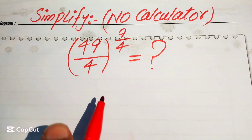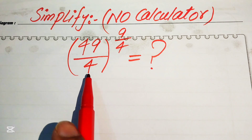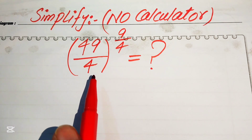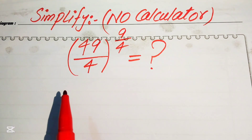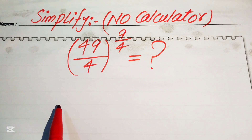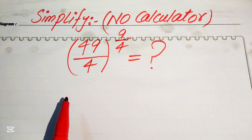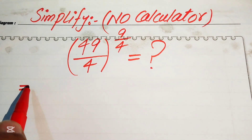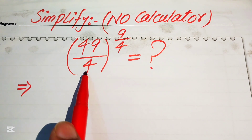Hello everyone. How to simplify this algebraic expression: we have 49 over 4 to the power of 9 over 4. We write this into the lowest form. Remember, a calculator is not allowed in this problem, so I will show all of the working on your page or paper. The very first step is to focus on the base of this term — this is 49 and this is 4.